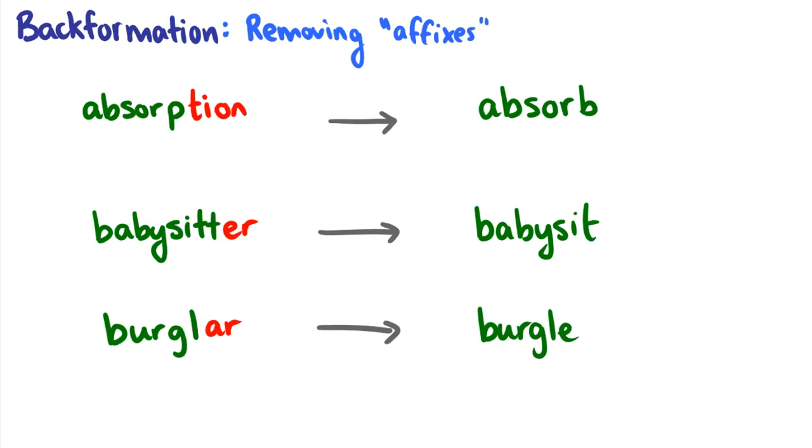Okay, we have back formation too. Now back formation is different from clipping because in back formation we're removing affixes. We're removing things that people think are affixes. So one example would be the word absorption. Absorption has been reduced to the word absorb because we think that tion is a suffix on the word absorption.